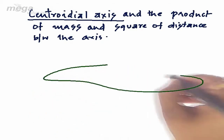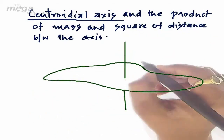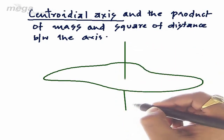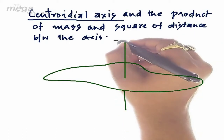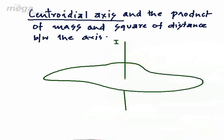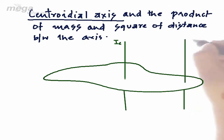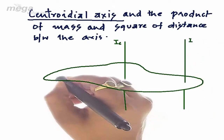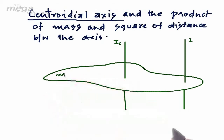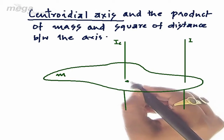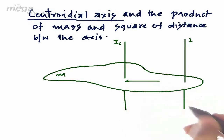Let us consider a rigid body. Let the moment of inertia of the centroidal axis be denoted by Ic, and we are required to find the moment of inertia of a given axis which is parallel to the centroidal axis. Let the moment of inertia of this given axis be I, the mass of the rigid body be M, and the distance between the centroidal axis and this given axis be X.